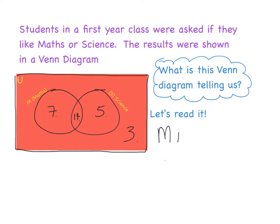The intersection of M and S is equal to 14. What does that essentially mean? This section here is in the M circle and it is also in the S circle. Students in a first year class were asked if they liked maths or science, and 14 people are in the middle — in the intersection. So that means 14 people like both maths and science.